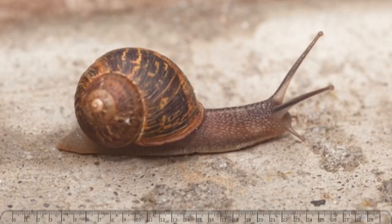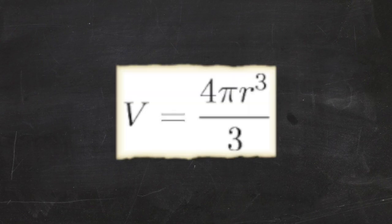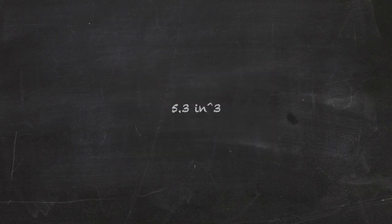Researching the measurements of a garden snail, we find that they are, on average, 1.3 inches wide. I don't want to get too mathy, but basically, if we know his width, we can find the total volume his shell can hold. 5.3 cubic inches.